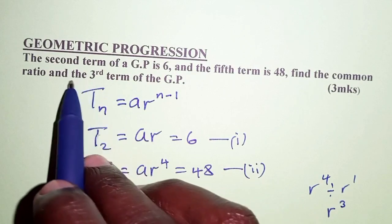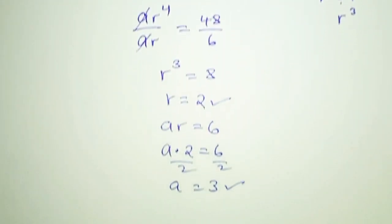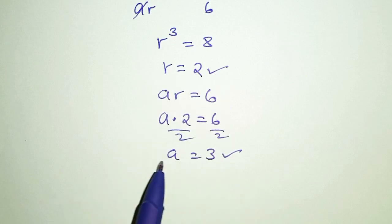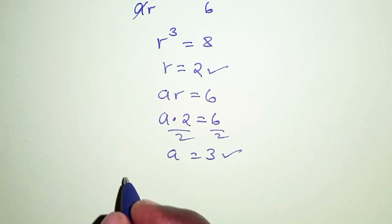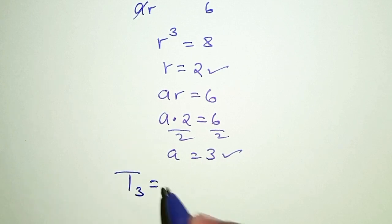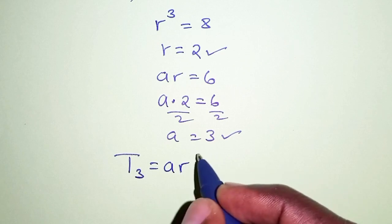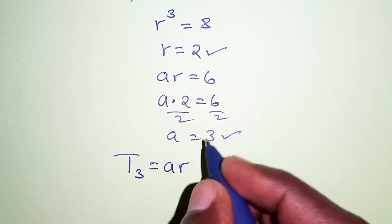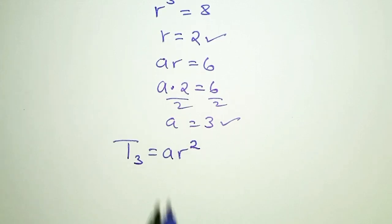Now given the common ratio and the first term, we can now determine the third term. And the third term is given as ar to the power n minus 1, and n is 3, so that we have 3 minus 1, which is 2. But we already know the value of a. a is 3.